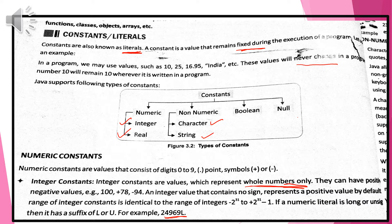Numeric — all of you understand — that is the number, which consists of 0 to 9, decimal point, symbols plus or minus. All these are coming under the numeric constant. The numeric constant is again divided into integer and real.